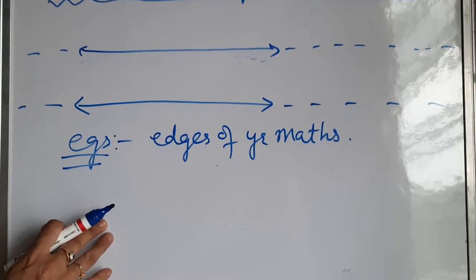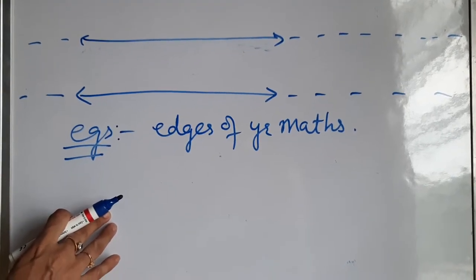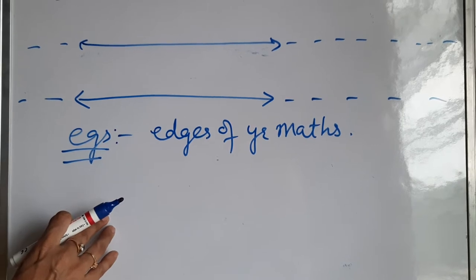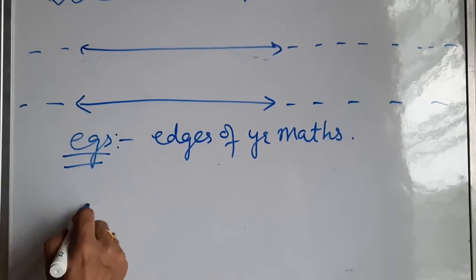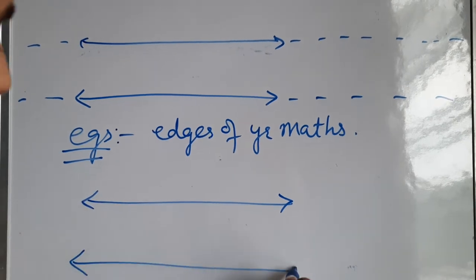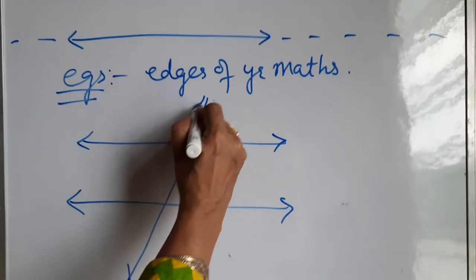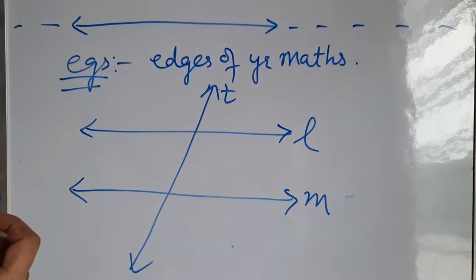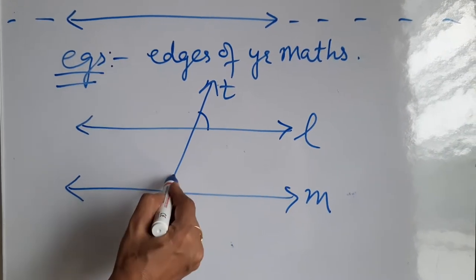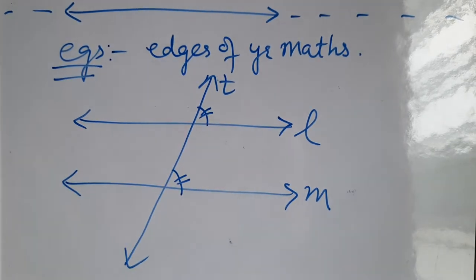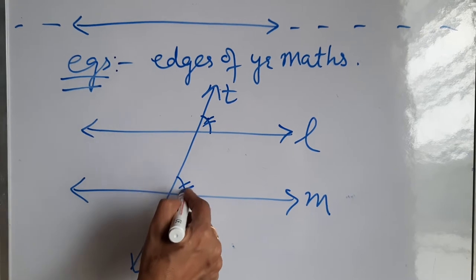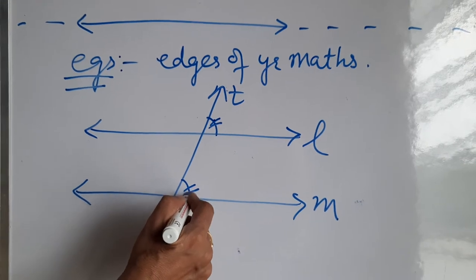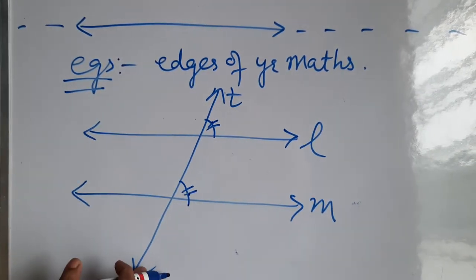For parallel lines, you have to note down three important facts. If two parallel lines are cut by a transversal — suppose lines L and M are parallel and cut by transversal T — then each pair of corresponding angles are equal. For example, this angle and this angle are corresponding angles. If lines are parallel, corresponding angles are always equal. This is the first fact to note down.